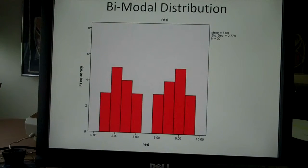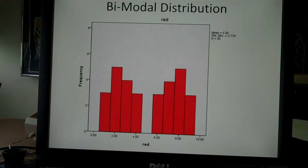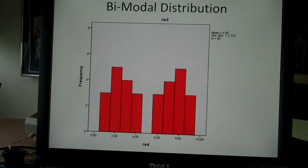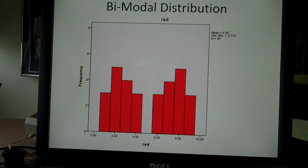This is the red distribution. It's bimodal, which means that there are two modes. This distribution, like the previous two, has the same mean and median: 5. It has two modes, which is why it's called a bimodal distribution — a mode of 2 and a mode of 8.